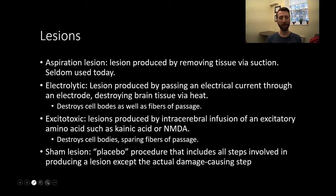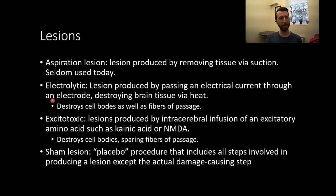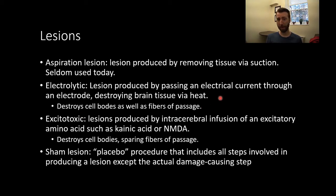There are different types of brain lesioning techniques. The first is aspiration — a lesion produced by removing tissue via suction. This isn't really used today; it's an earlier method. Electrolytic lesions are produced by passing an electrical current through an electrode — the uninsulated tip of a metal wire dropped into brain tissue. A current is passed through, destroying tissue via heat. This destroys everything — cell bodies as well as fibers of passage.